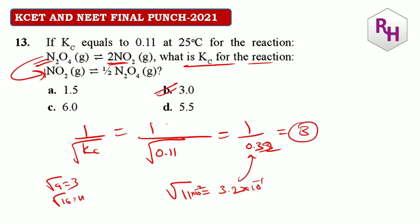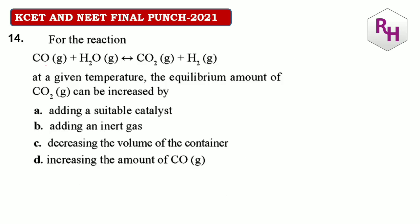13th question answer should be B. 14th: for the reaction CO + S2 → CO2 + S2 at a given temperature, the equilibrium amount of CO2 can be increased by increasing the amount of CO, which is a reactant — adding more reactant shifts equilibrium towards the product. The answer for this question should be D.